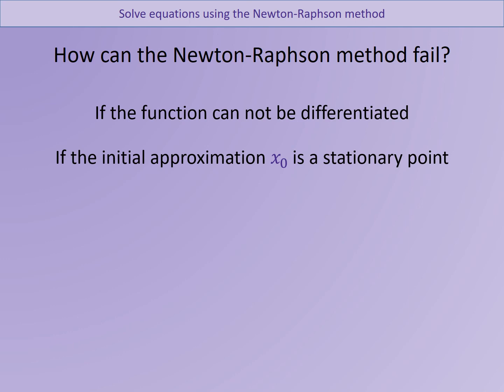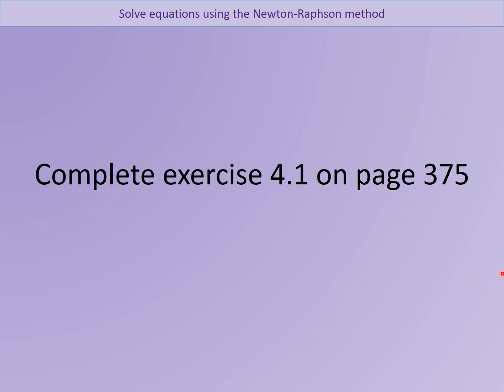Of course, the first one you can't do much with, because you can't differentiate it, you can't use the formula at all. The second one's easily solvable, you just pick a different value that's not a stationary point, and therefore it should work. Right, what I'd like you to do is just practice some of those skills with Newton-Raphson by completing the exercise 4.1 on page 275.